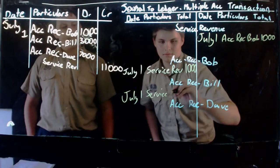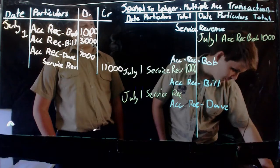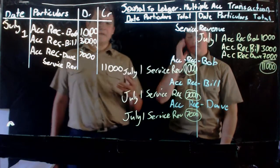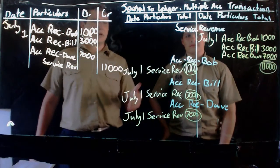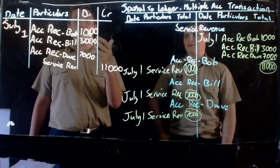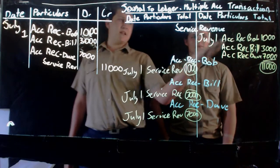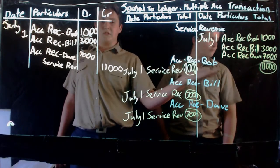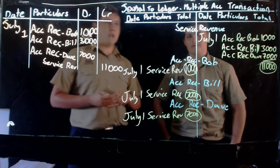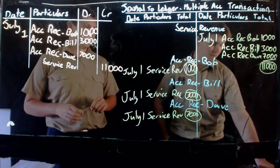As you can see, we've gone ahead and finished posting that journal to the ledger. We've posted Bob, Bill, and Dave all into their accounts for one thousand, three thousand, and seven thousand dollars, and then into the separate accounts in the service revenue, which still equals eleven thousand dollars in total. I hope that teaches you how to post the journal to the ledger with multiple accounts — have a good day!